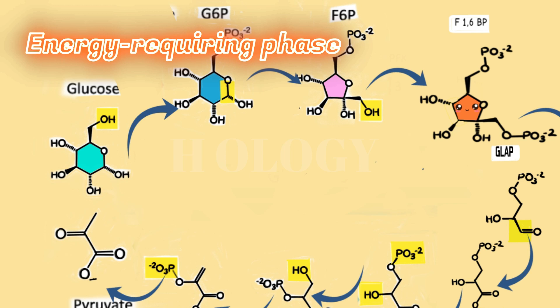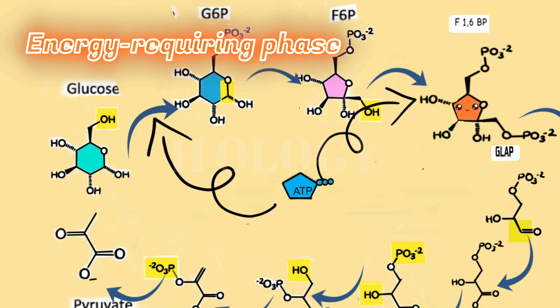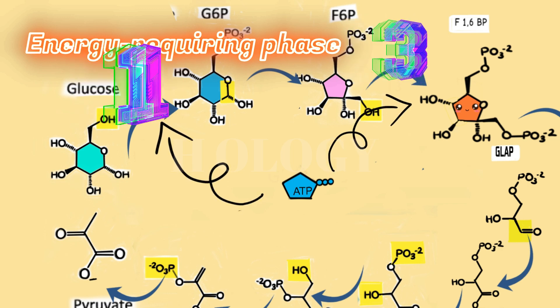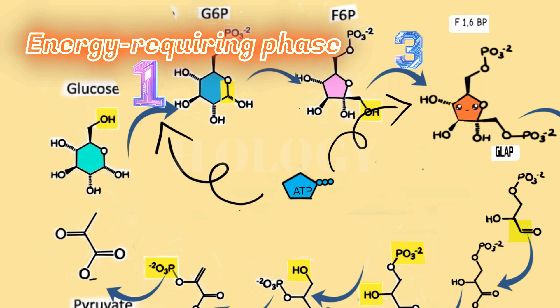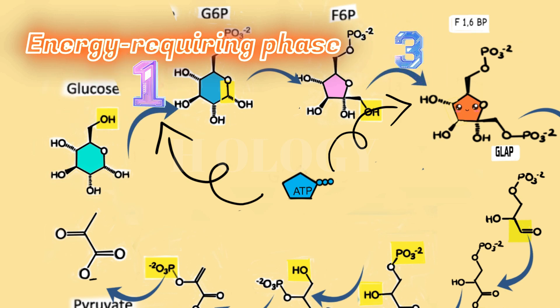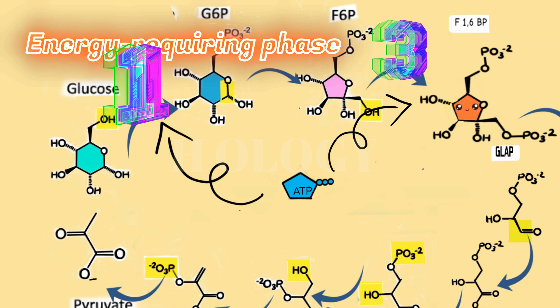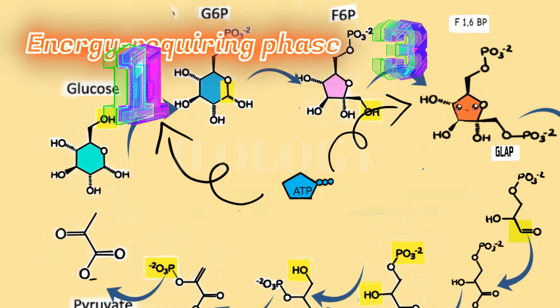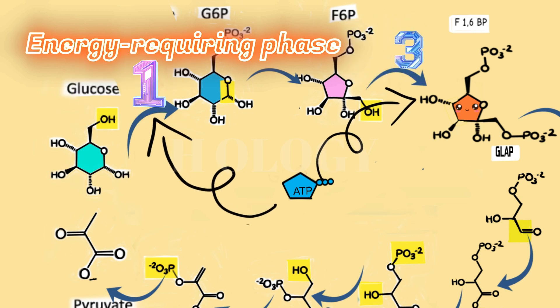Now let's explore the energy-requiring phase of glycolysis. In this phase, the starting molecule of glucose gets rearranged and two phosphate groups are attached to it. ATP is used up in the first and third steps, and both of these chemical reactions are catalyzed by a kinase enzyme. It is an irreversible process.